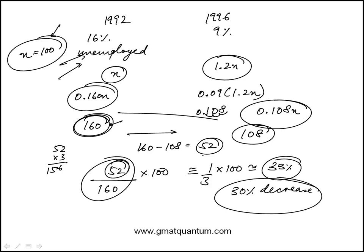Just an aside, if you want, you can also leave it in terms of n in a more general sense. The answer would be exactly the same. In this case, the difference here would be 0.052n. And then we would be doing 0.052n over 0.160n, which is the original, times 100.